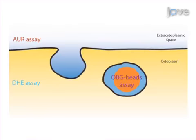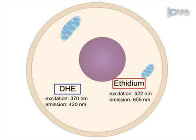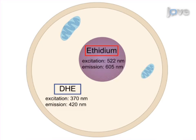The second method utilizes the superoxide sensitive probe dihydroethidium or DHE in a plate reader based assay. As a result of oxidation by superoxide, ethidium is able to intercalate into nuclear and mitochondrial DNA and has shifted excitation and emission peaks at 522 nm and 605 nm respectively.